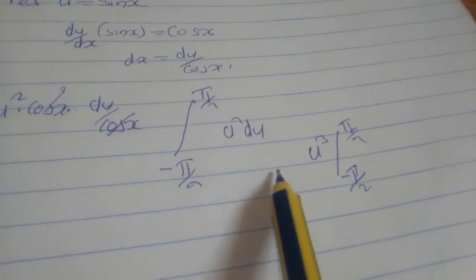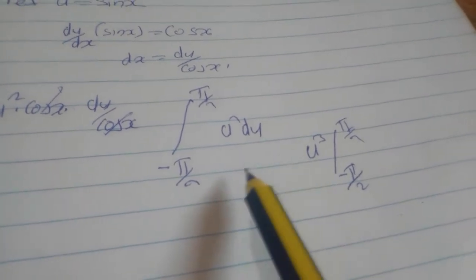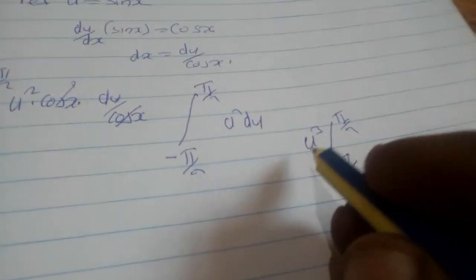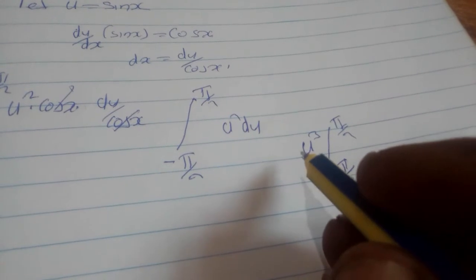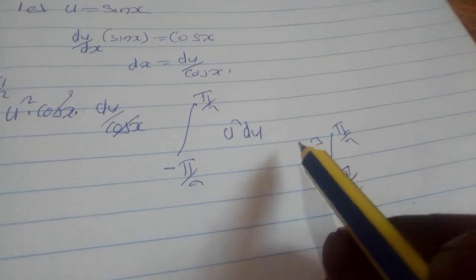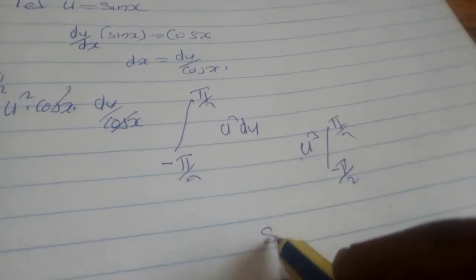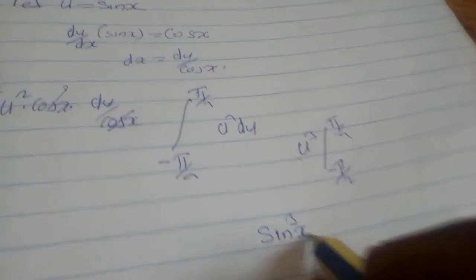But from our previous work we know that u equals sin x. So we are going to substitute u with sin x. So we are going to get sin³x over 3.